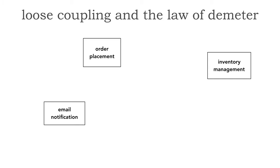Let's see a simple example here where we want to place an order. I've got three components or services. These could be components within a monolith or separate services within a service-based or even microservices architecture. We've got an order placement, an email notification, and an inventory management.